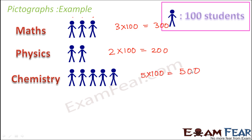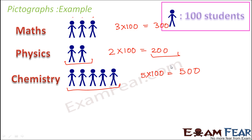Now if I ask you which subject is liked by most students — even before doing calculations, just by looking at the pictograph, you can say that chemistry is the one liked by most because you have more pictures for chemistry. If asked how many like physics, since you have two pictures, 200 people like physics. So this is how we can interpret a pictograph and fetch information from it.